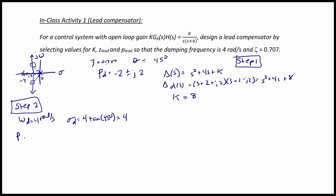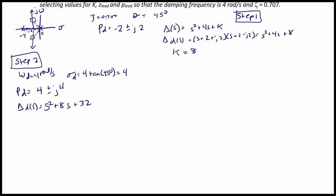So my desired poles are now 4 plus or minus j4. Or the desired characteristic equation is now s squared plus 8s plus 32.